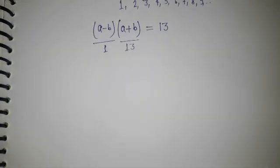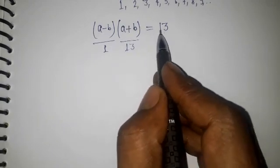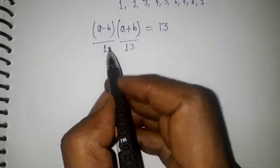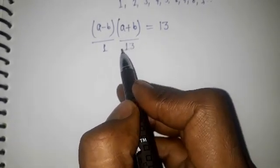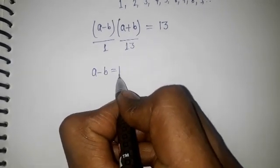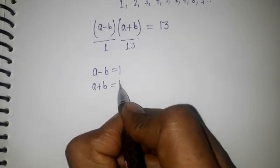So what I'm going to do is factorize 13: 1 and 13, two factors are there. So that's why I put here a - b = 1 and a + b = 13. So I'm having a - b = 1 and a + b = 13.